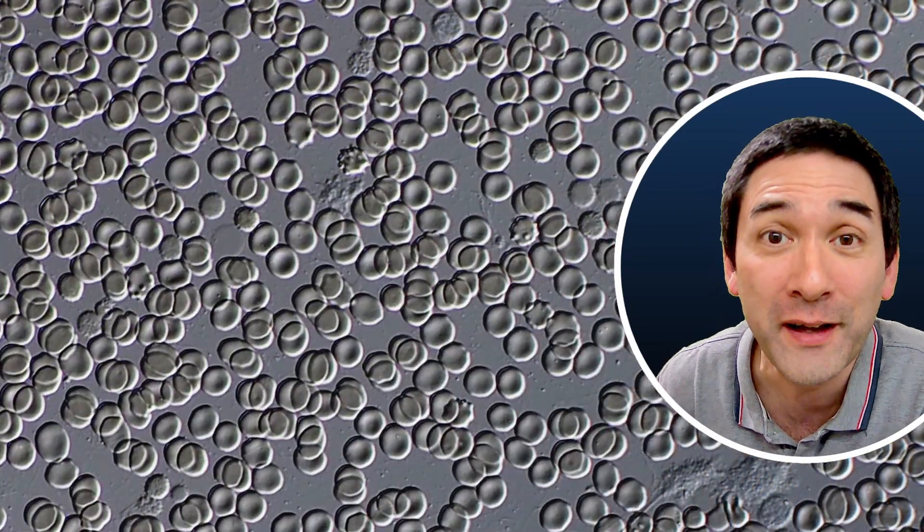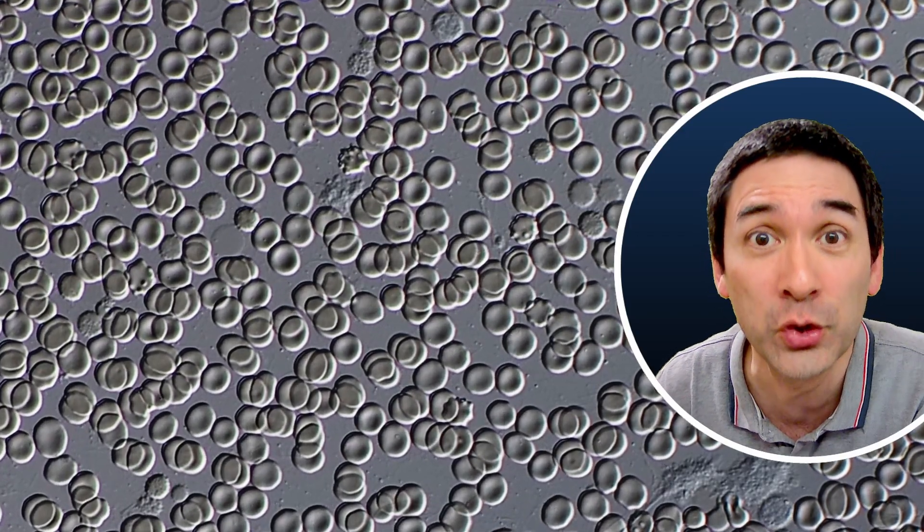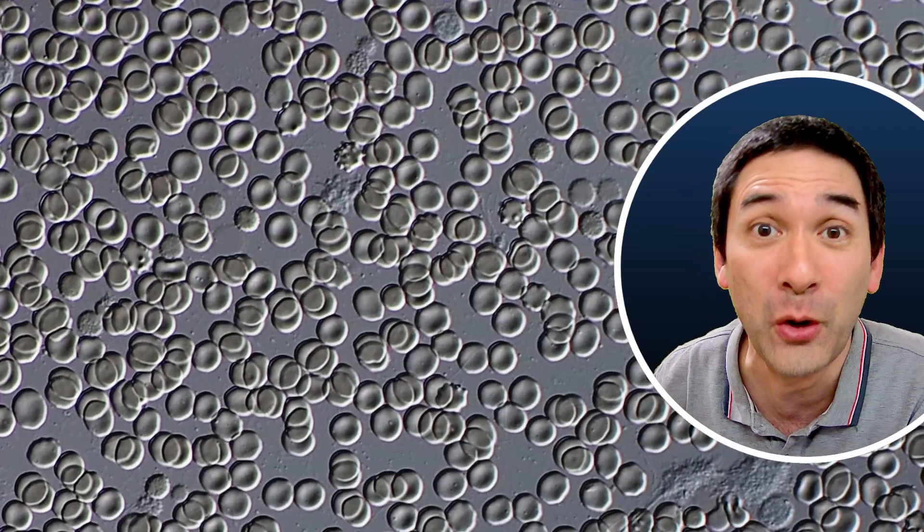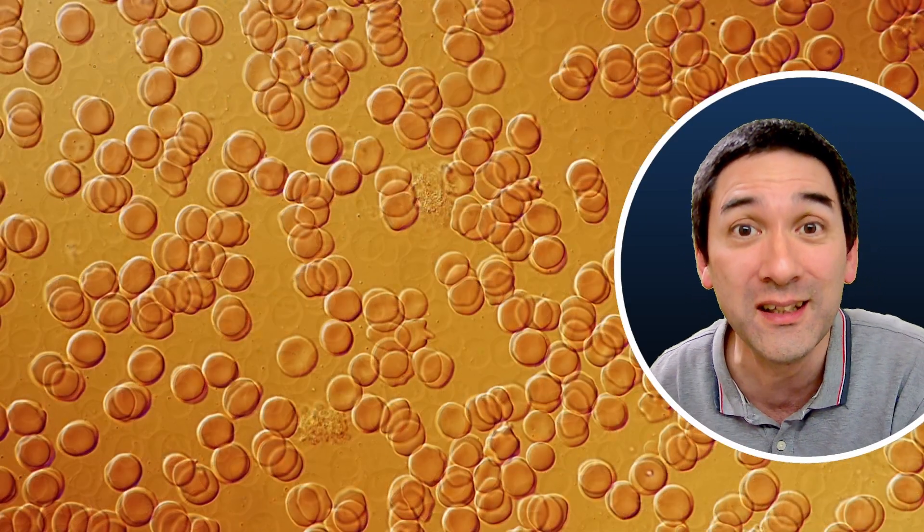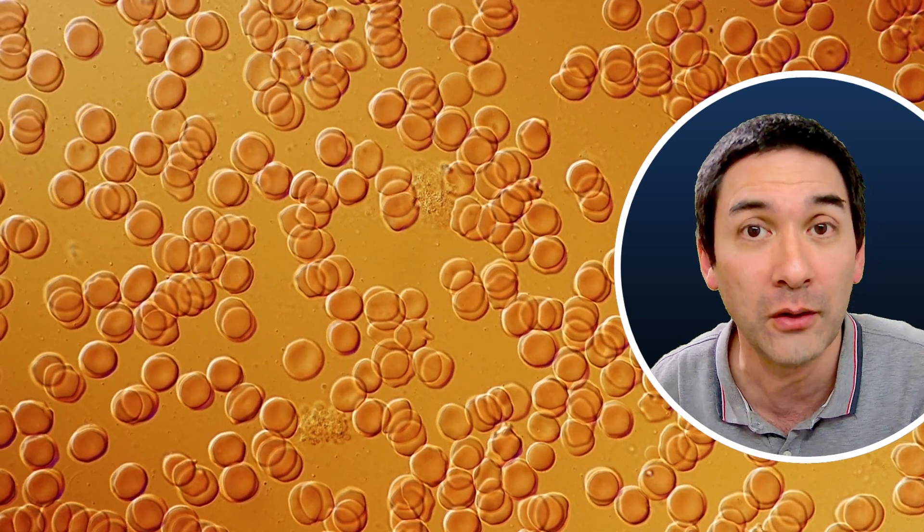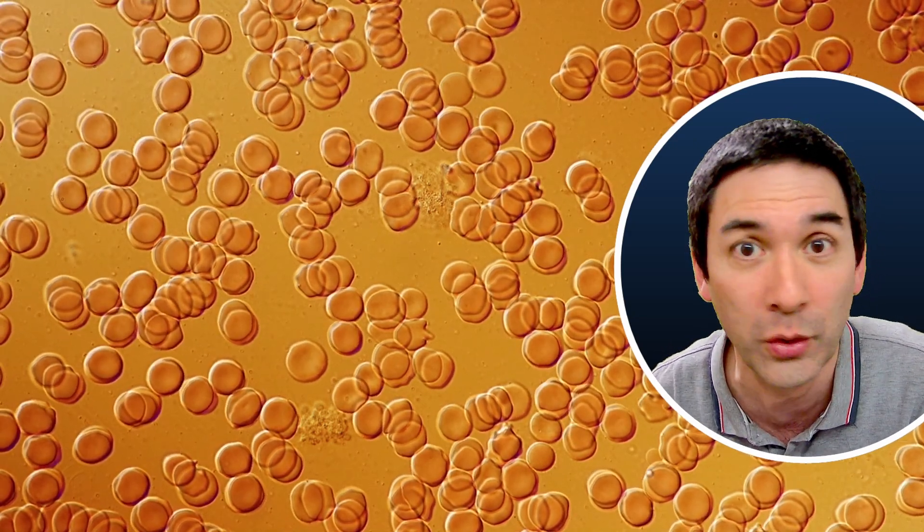We're going to find out today because I'm going to be adding a little bit of salt water to red blood cells. These are the ones that you see in the background here. Also to paramecia, which are single-celled microorganisms and also to onion cells. And all of these cells, they don't like salt water at all.